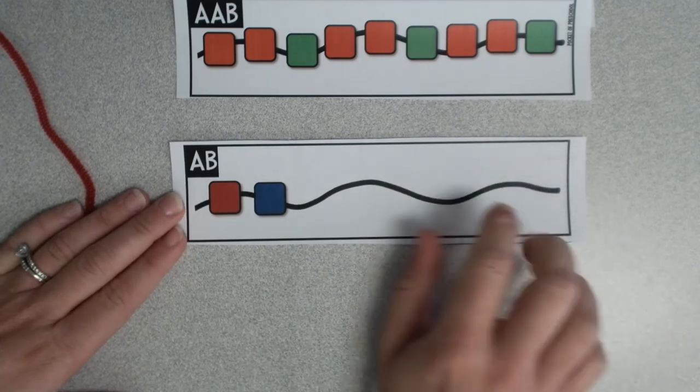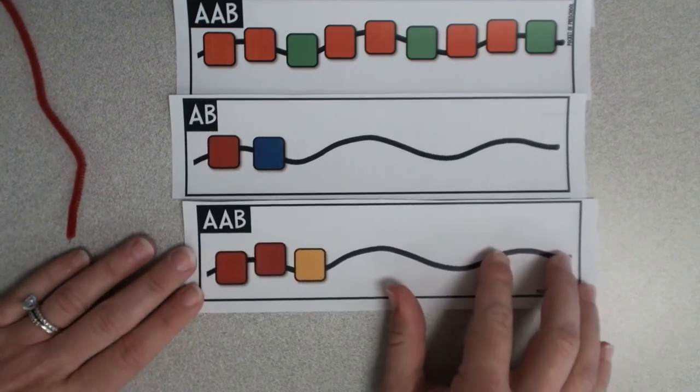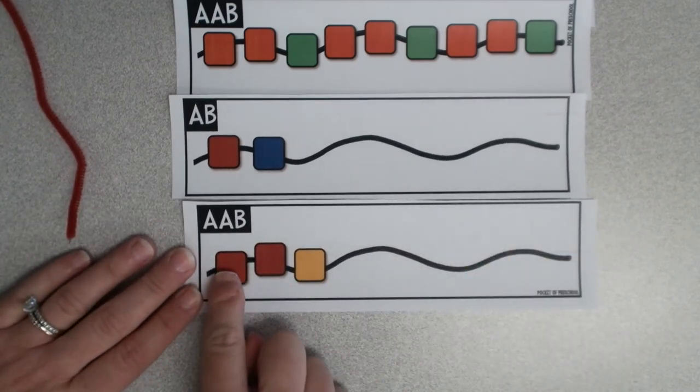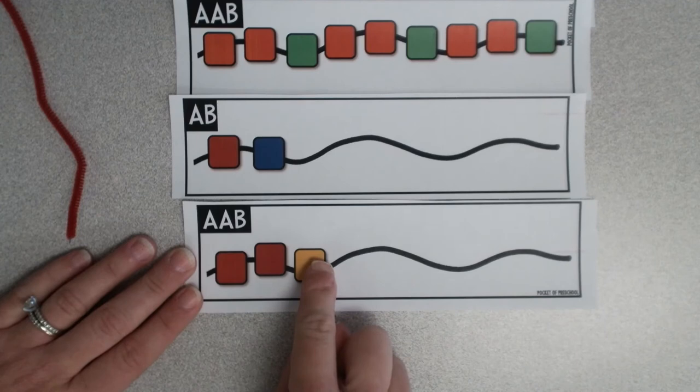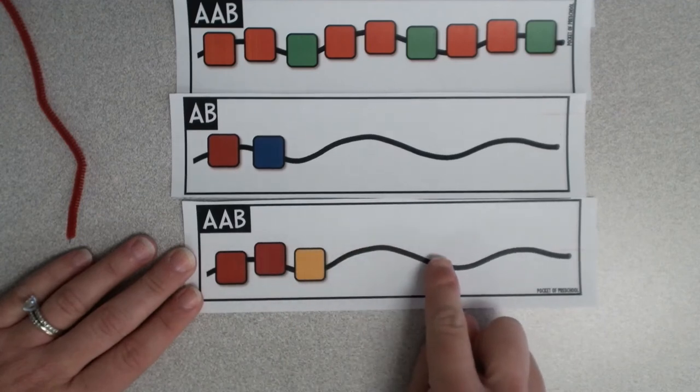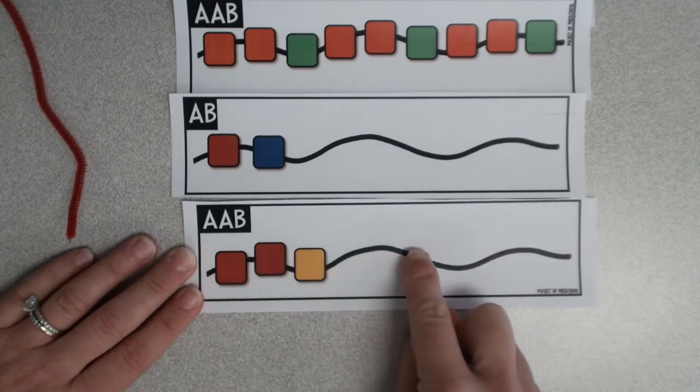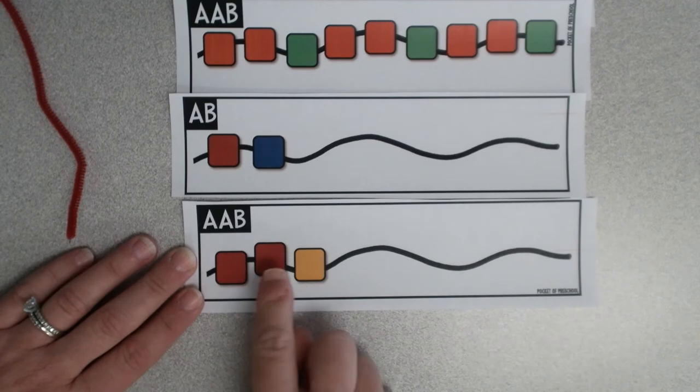All the way down the row. Or you can make it an even more difficult extended pattern. Red, red, yellow. What comes next? Red, red, yellow. Red, red, yellow. Let the children finish or extend the pattern that you have started for them.